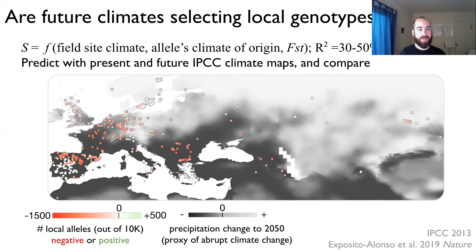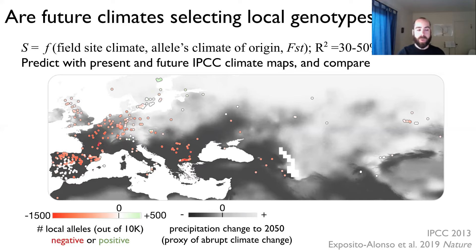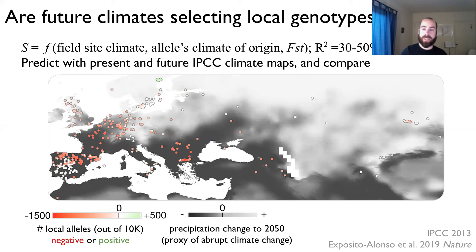In a second step, we tried to predict which alleles will be positively and negatively selected in natural Arabidopsis populations shown on the map, by fitting present climates and future climates predicted by the IPCC to the fitted model. This allowed us to measure whether local alleles will be more negatively selected in the future. Populations shown in red indicate that local alleles will be less fit in the future — the change in climate might create maladaptation. This is a relative metric indicating relative risks of local extinction, but not a prediction of actual extinction, as that would require demographic modeling.